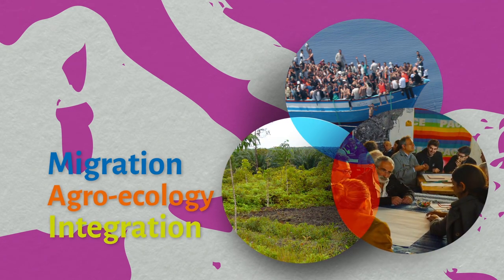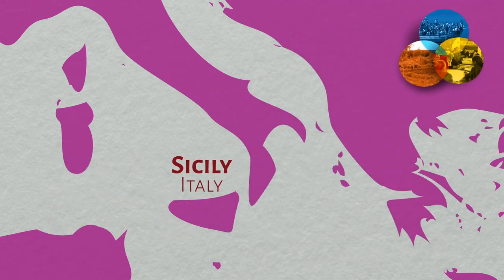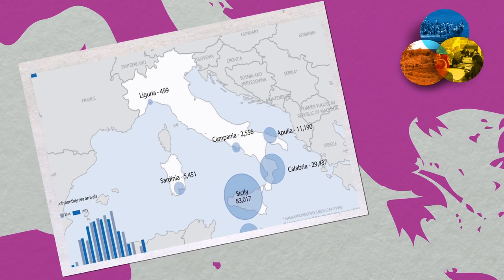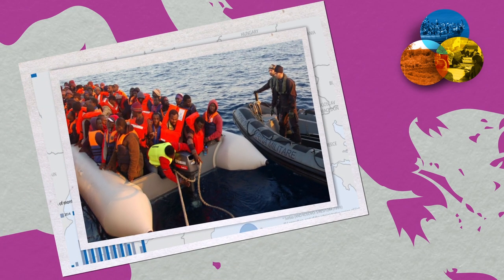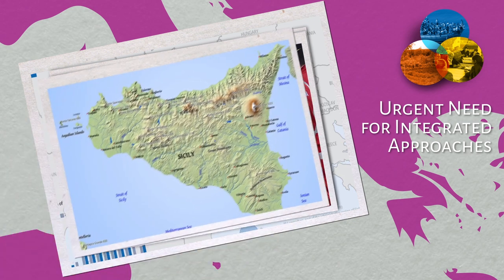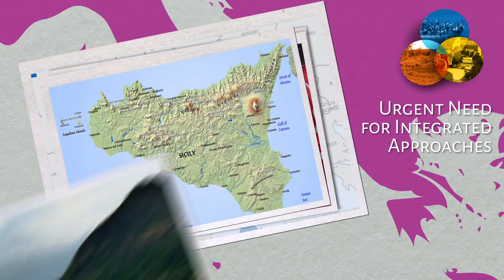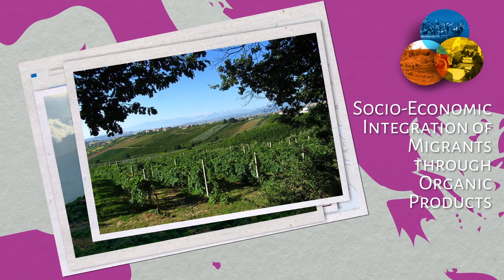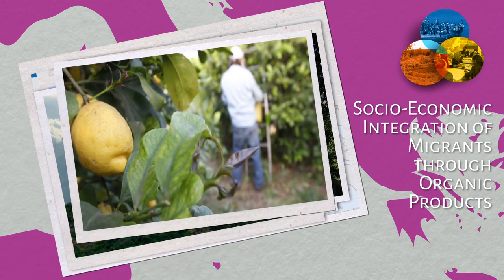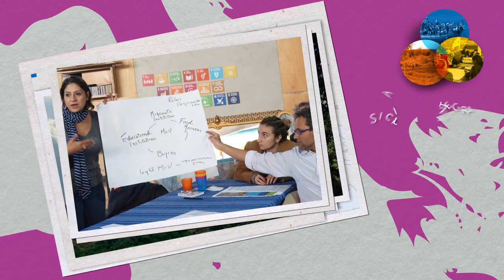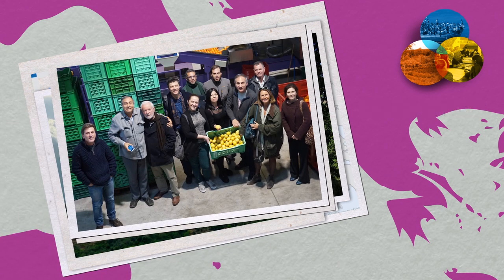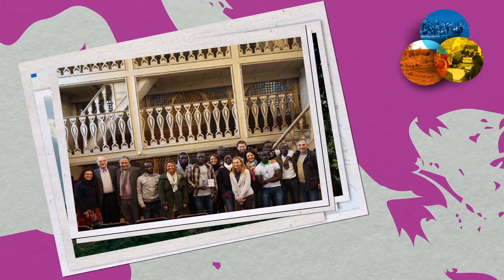Migration. Agroecology. Integration. Each year, thousands of migrants attempt a dangerous journey across the Mediterranean to Europe. Many of them are trying to escape poverty, climate, and war. Sicily has always been a crossroads of agriculture — it has the largest surface of fertile organic land and the highest number of organic operators in Italy. Sicilia Integra supports the socio-economic integration of migrants through agroecological capacity-building activities, while contributing to the fair trade of organic products in Europe.